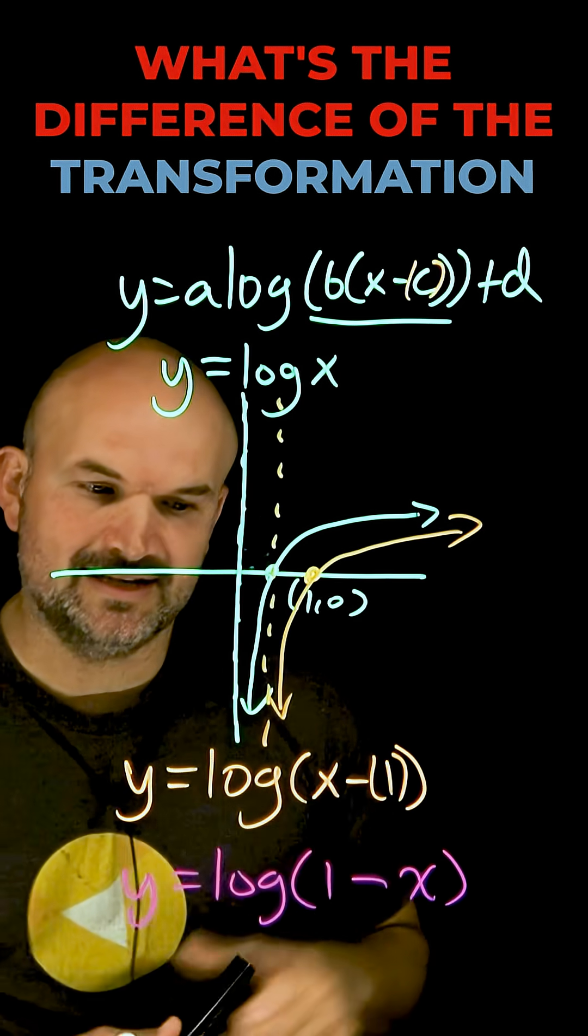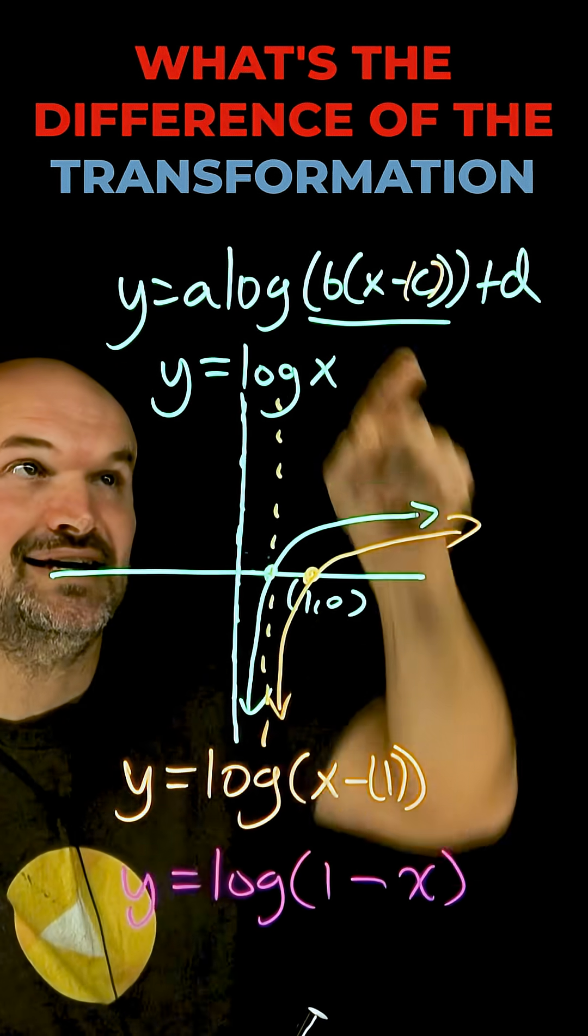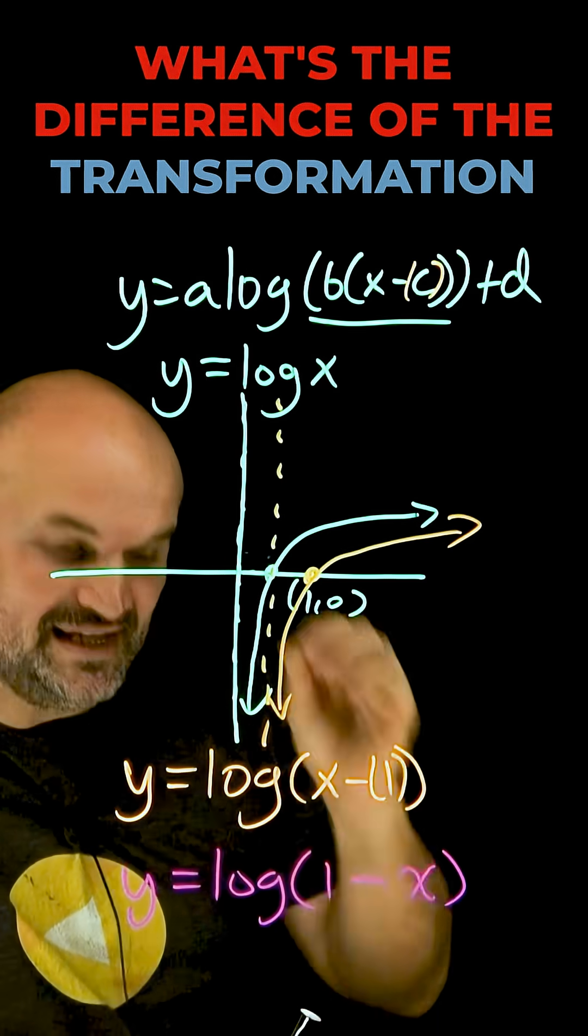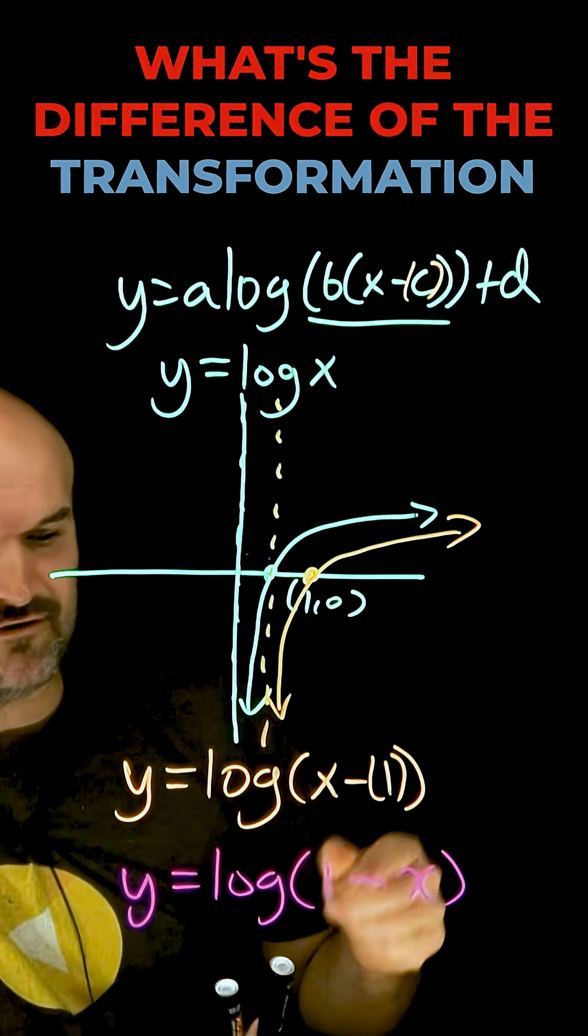Now let's go and take a look at 1 minus x. Now you can see 1 minus x is not in this formation of b times x minus c. So what we need to do is put it into that formation.